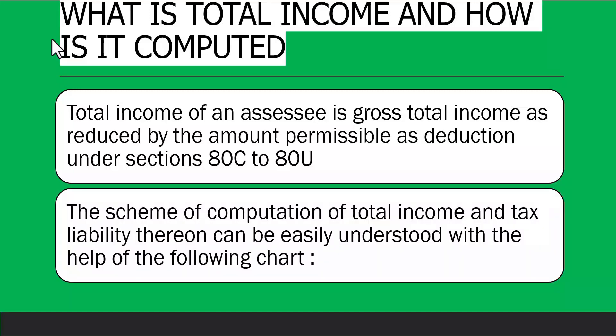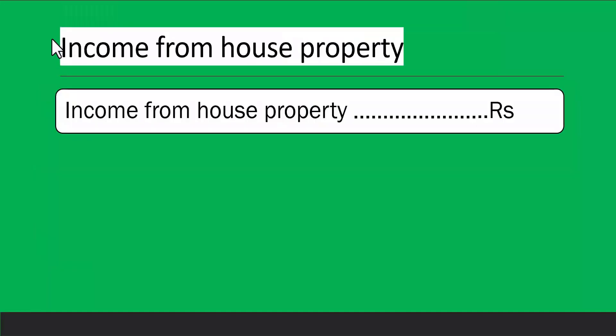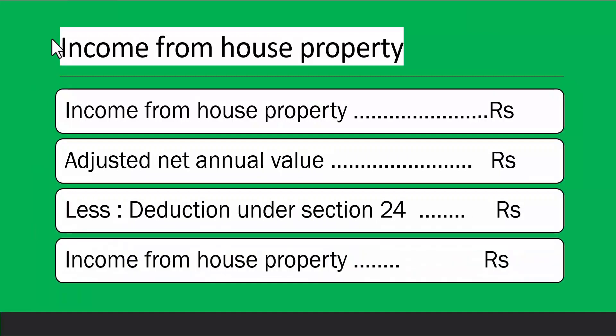The scheme of computation of total income and tax liability can be understood with a chart. For income from salaries, you first compute your gross salary, account for allowances and perquisites such as a house provided by the company, apply the relevant deductions, and the result is your income from salaries on which you pay tax. There are specific rules and regulations for this which will be discussed later.